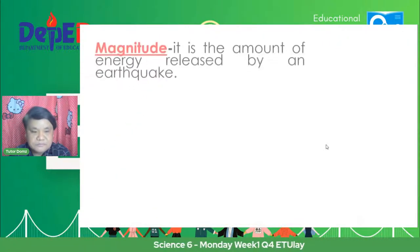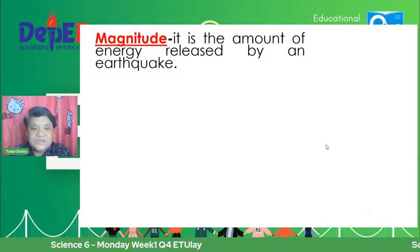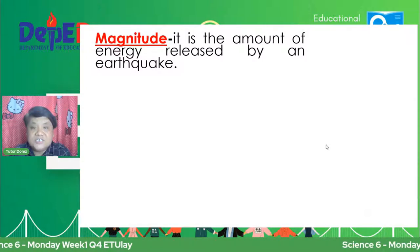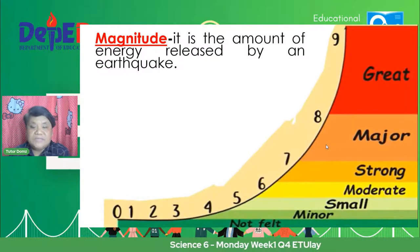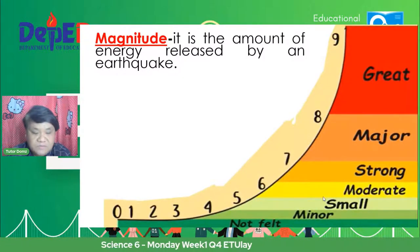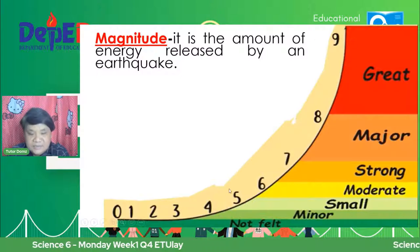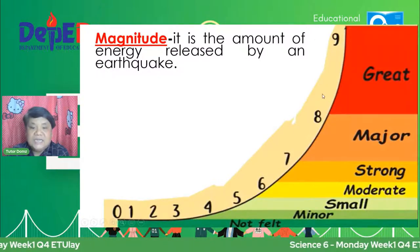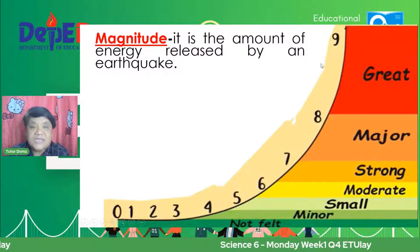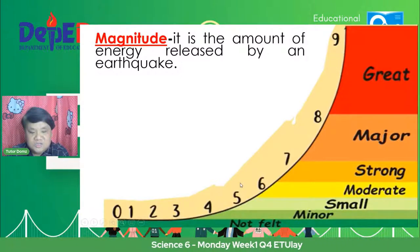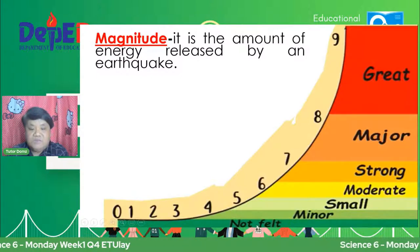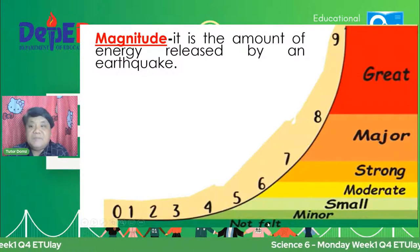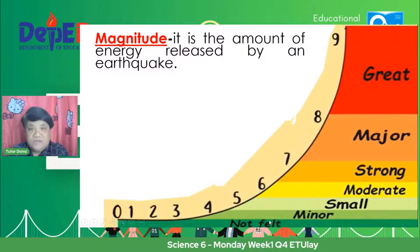Now let's proceed to the magnitude. When we say magnitude, this is the amount of energy released by an earthquake. Meron tayong ginagamit na panukat — 0 to 9, at 9 yung pinakamataas na nairecord pa lang ng mga volcanologists. Pag 0 to 3, not felt pa lang muna yan — ang nakakaramdam pa lang ay yung seismograph natin. Pagdating ng 4, andyan na yung minor.